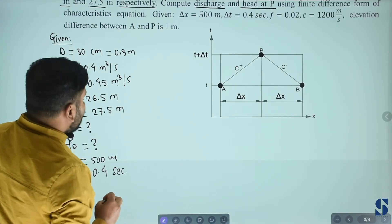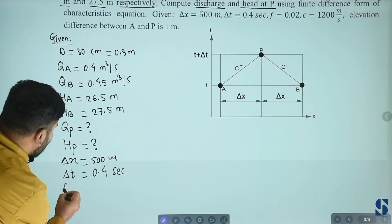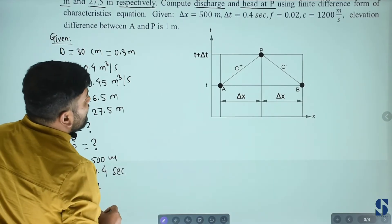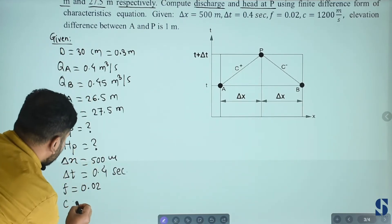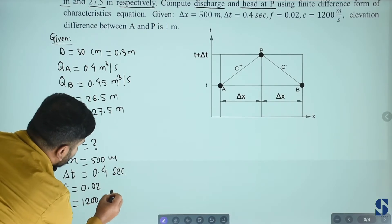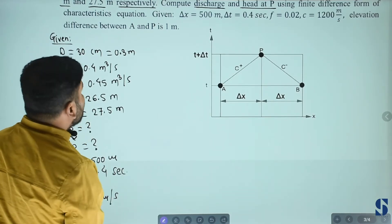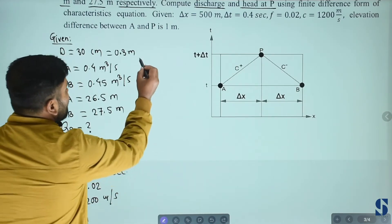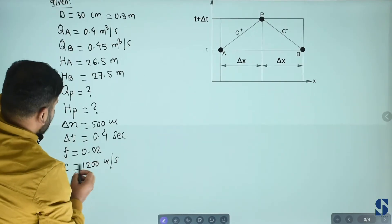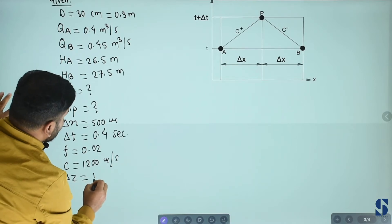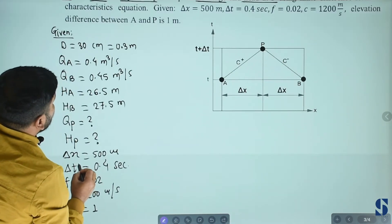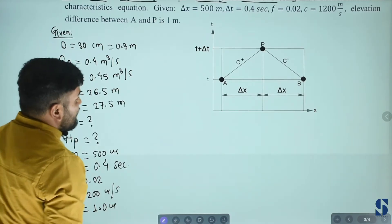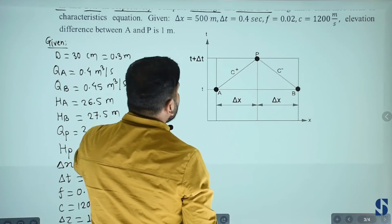Friction factor F value is 0.02, celerity C value is 1200 meter per second. Elevation difference delta Z value is 1.0 meter.